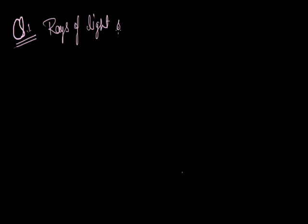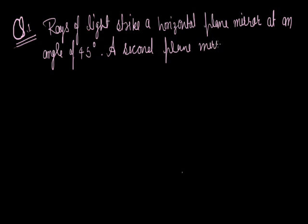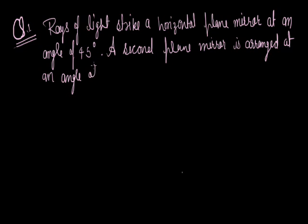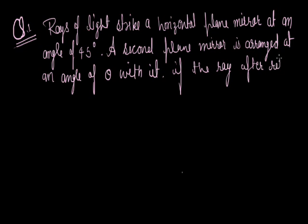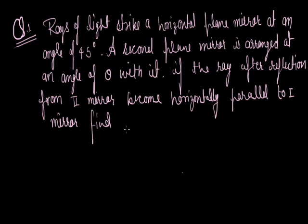So the first question is: rays of light strike a horizontal plane mirror at an angle of 45 degrees. A second plane mirror is arranged at an angle of theta with it. If the ray after reflection from the second mirror becomes horizontally parallel to the first mirror, find the angle theta.